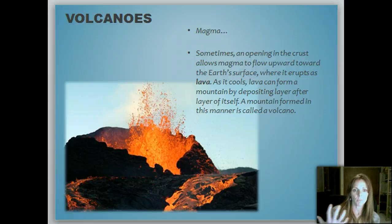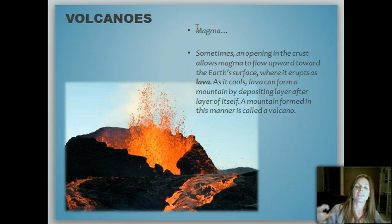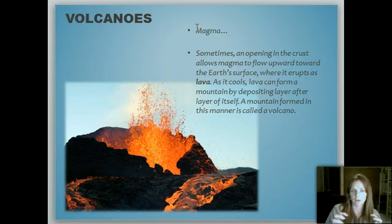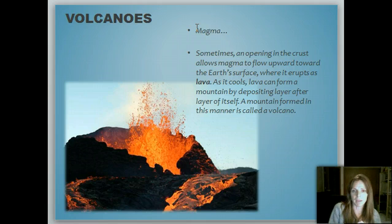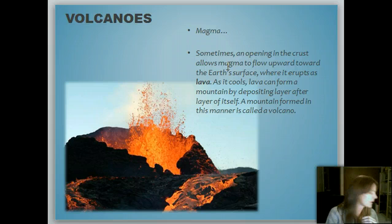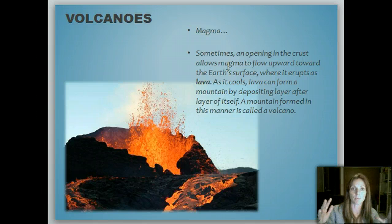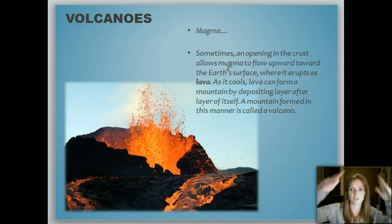Let's talk about volcanoes — pretty cool. I've seen an active volcano in Hawaii; it's pretty amazing. You have magma, something that is heated up deep within the earth, and pressure starts to build. When you think about the earth's core, it's an incredible temperature — everything is this molten substance. All that rock at extreme heat is liquid, in the form of magma. Sometimes you'll have openings in the crust that allow magma to flow upward towards the earth's surface.